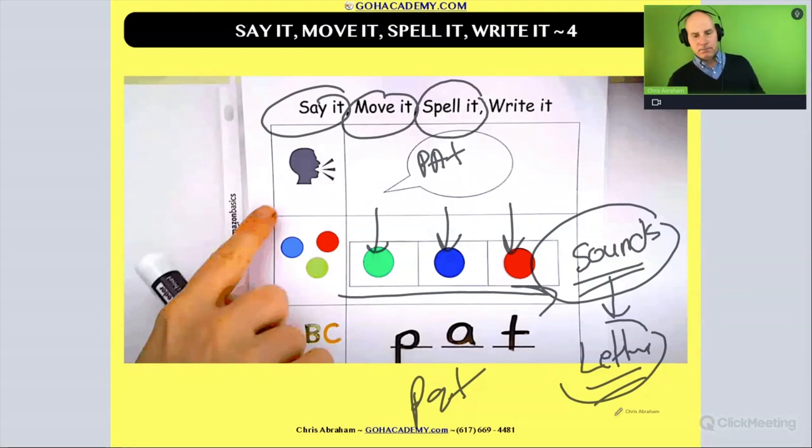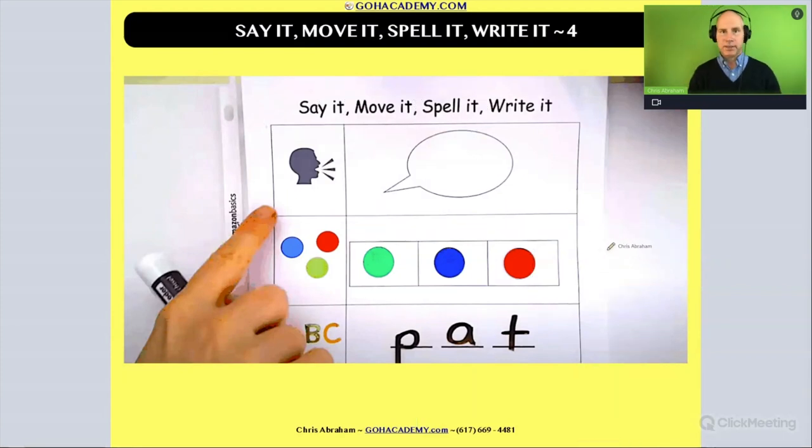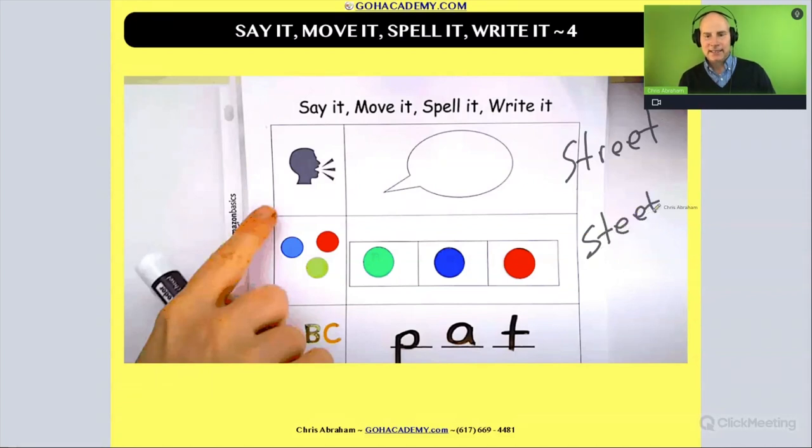Now let's say you had a student that was really having difficulty with decoding. Like they have a word like street. And when they pronounce the word, they're pronouncing it steat, right? Or maybe they're doing something else, but they're omitting sounds in that word.